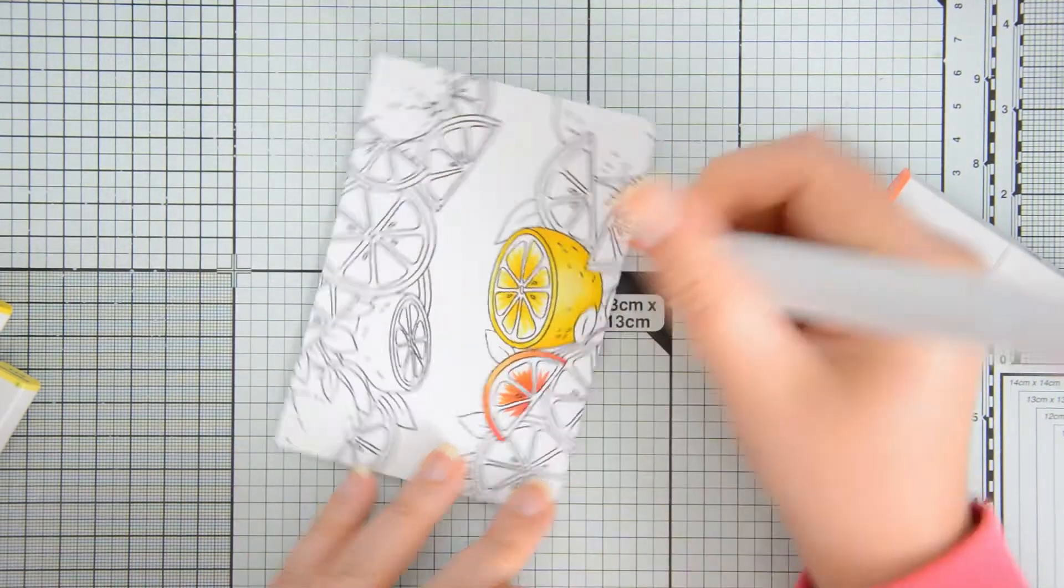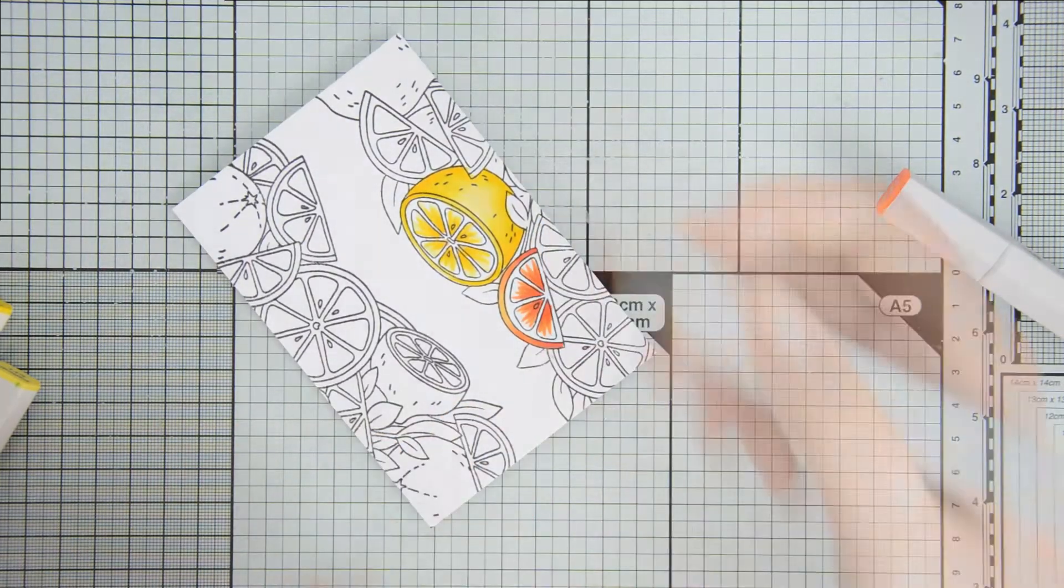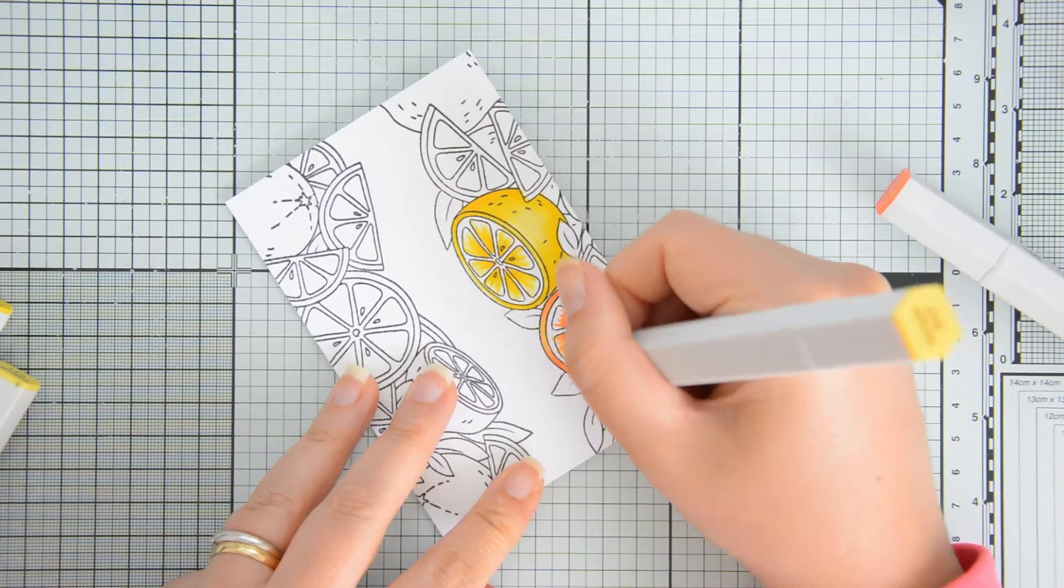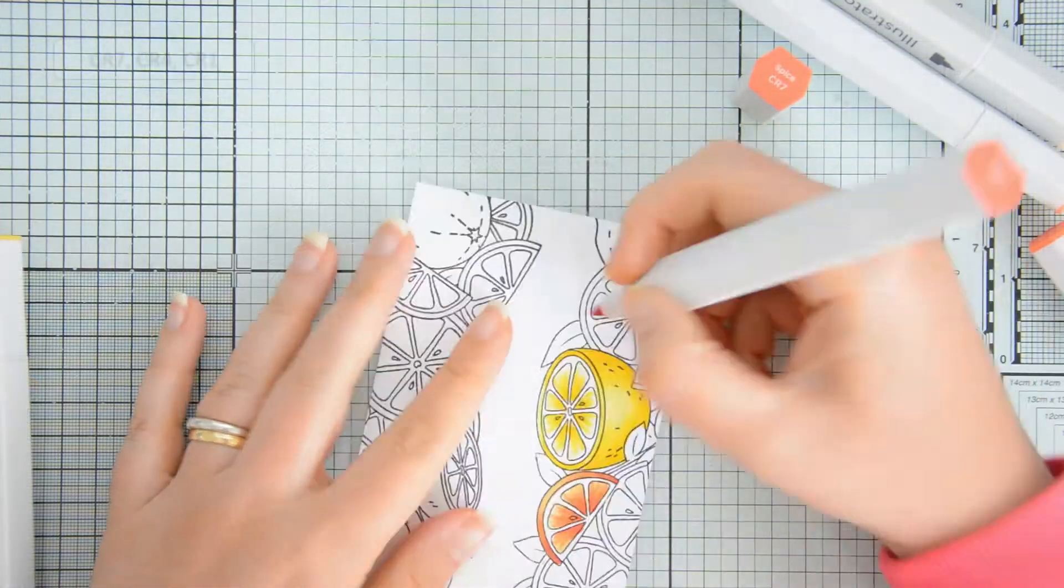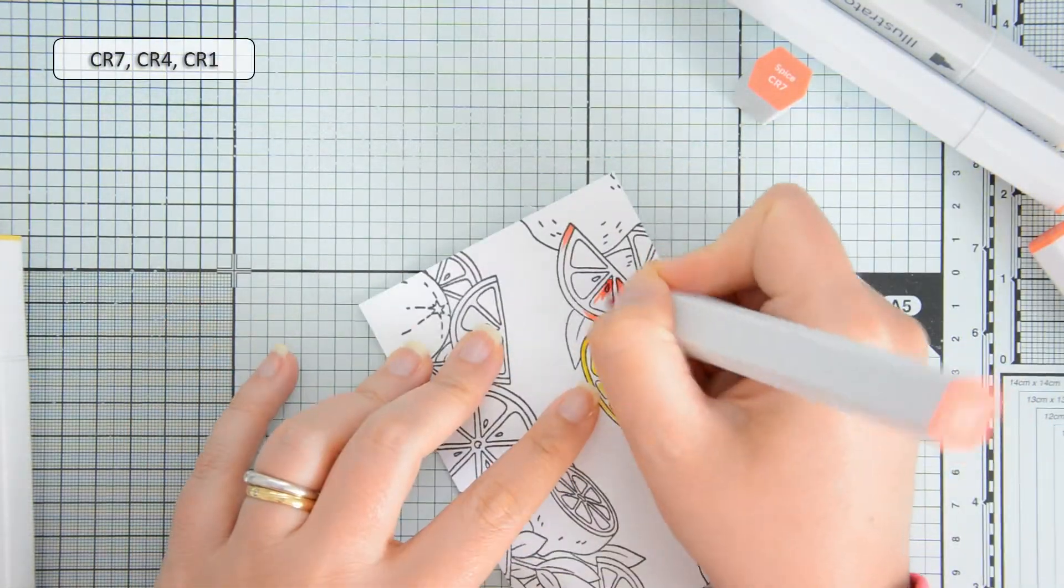If you think about a lemon or an orange or a grapefruit, they all are textured and by adding these brush strokes I am using a quick way to recreate a little bit of that texture.